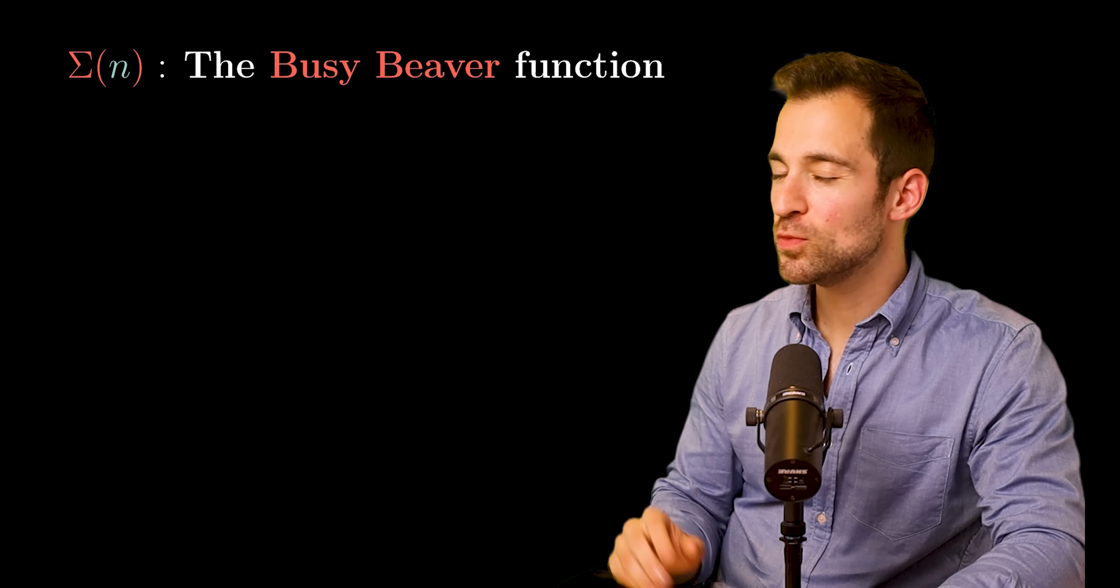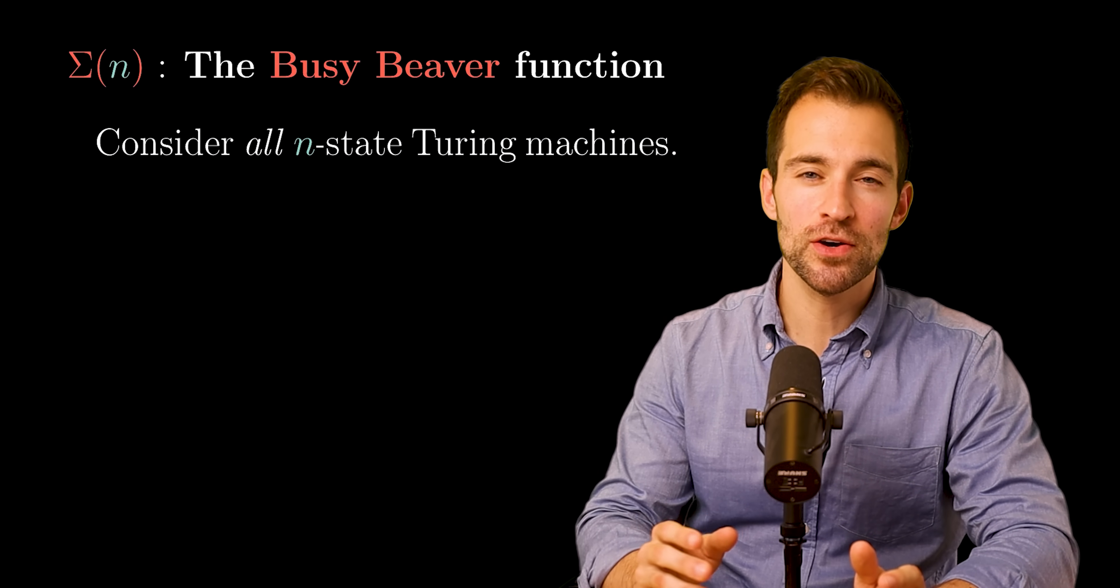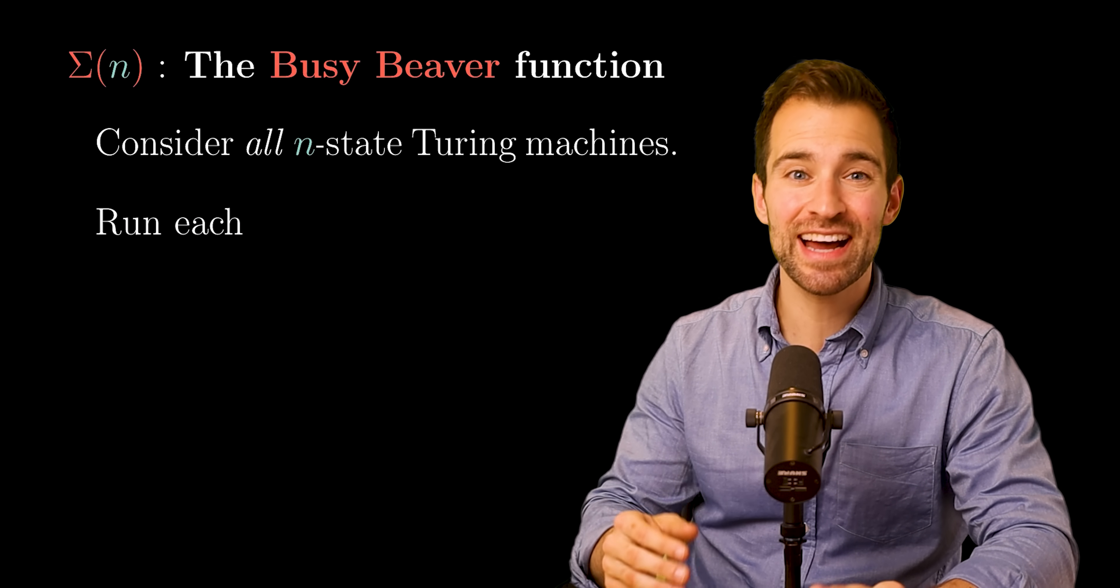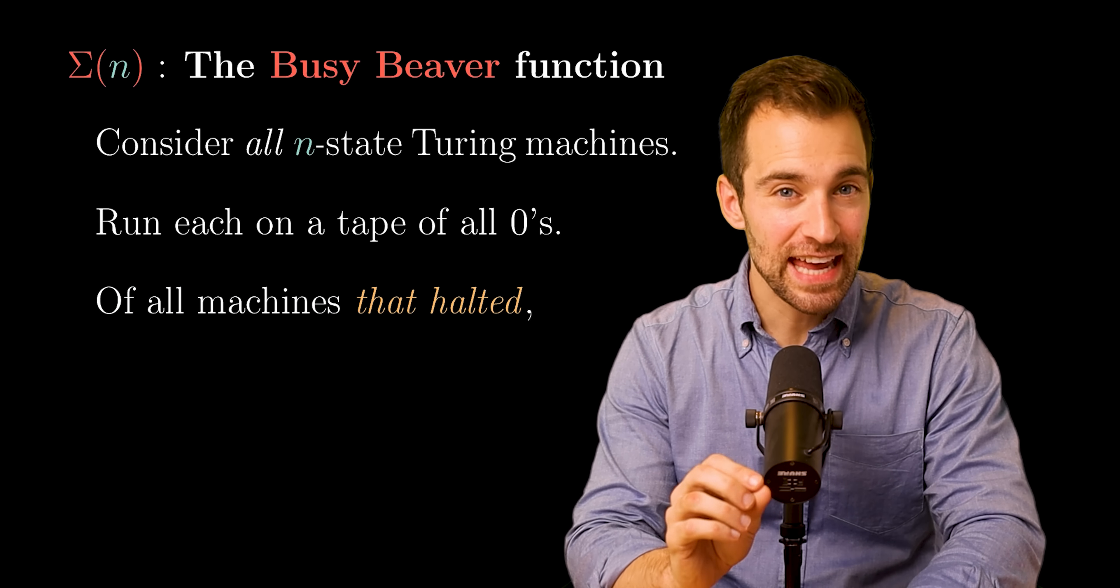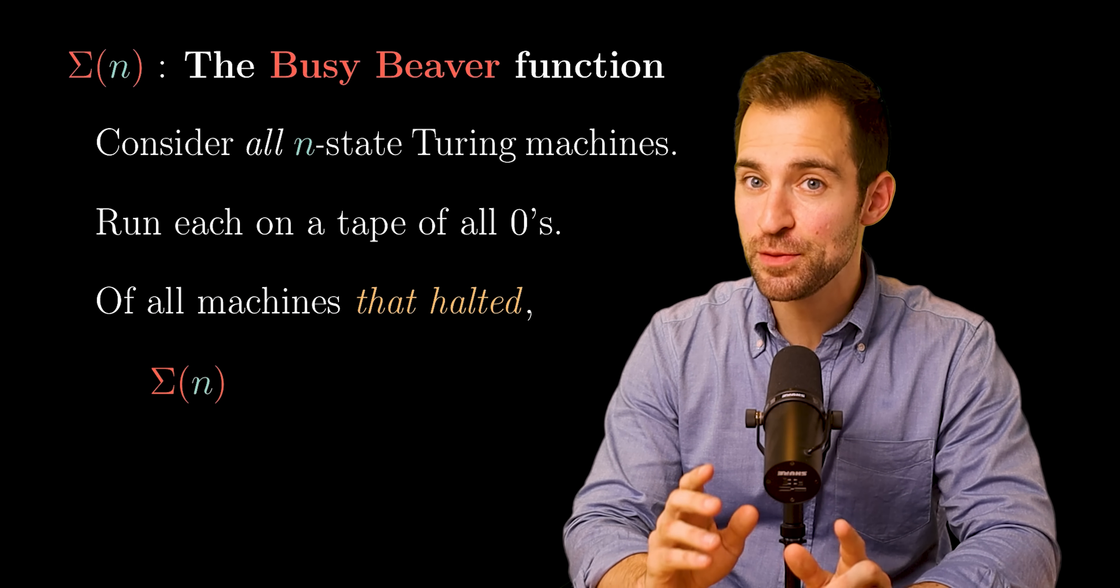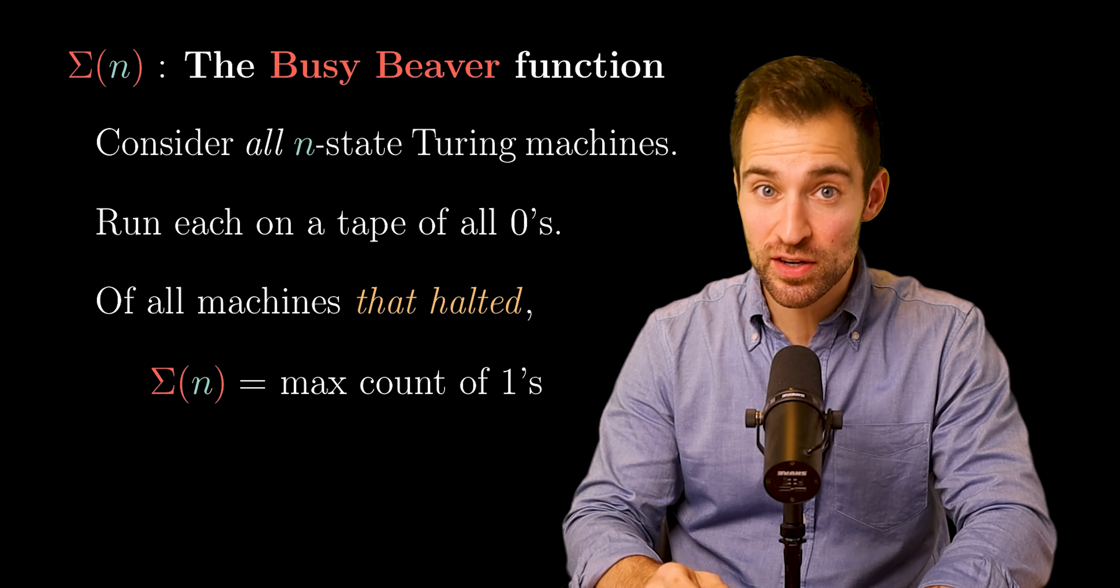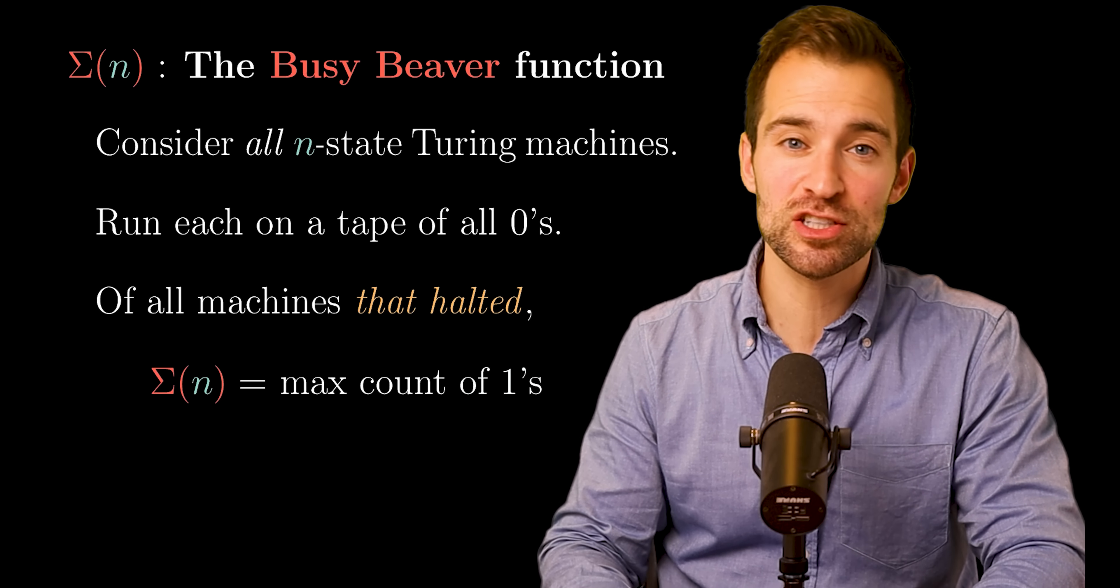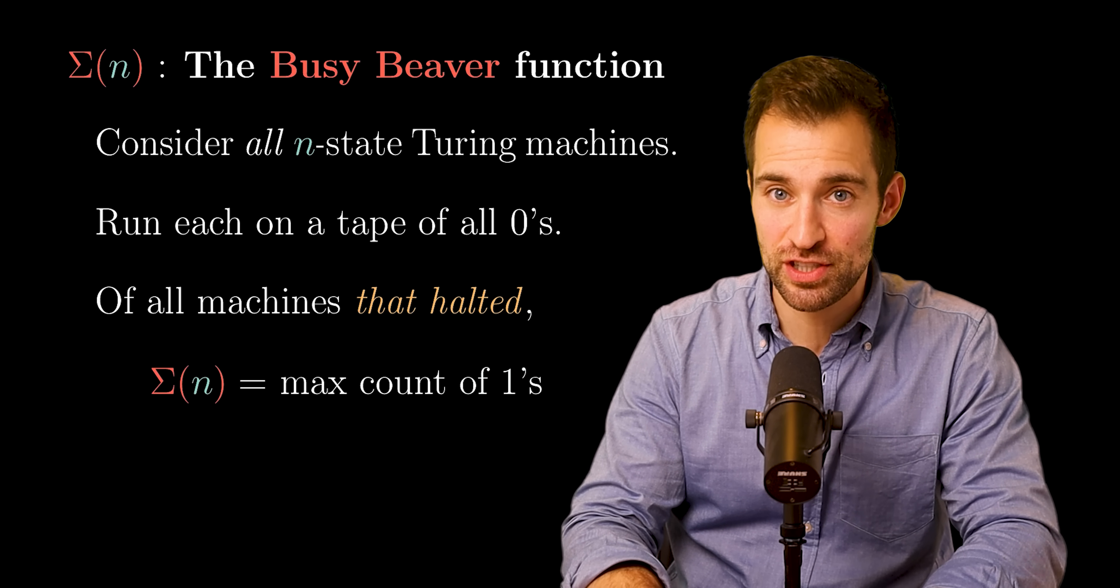And now we can ask, what is the BusyBeaver function, which we'll write as sigma n? First, we consider all n state Turing machines. So, think of all possible state tables. Second, we run each machine on a tape of all zeros. Next, we look at all machines that halted. The nth BusyBeaver number, sigma n, is the maximum count of ones written. So, each machine that halted will have written some number of ones over the all zeros tape. Sigma n is the max number of ones written by some machine. The machine that achieves this max is called the BusyBeaver machine.